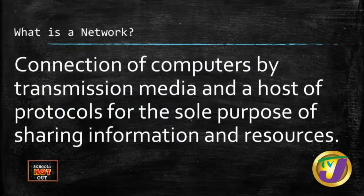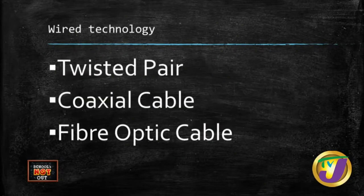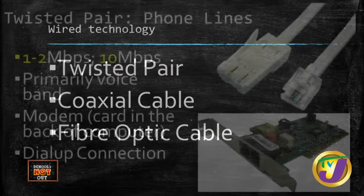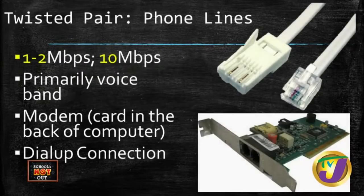The focus then will be on what these connections are. We have wired connections and wireless connections. The wired connections — there are about three of them: twisted pair, coaxial cable, and fiber optic cable.